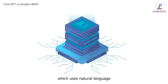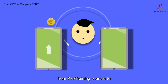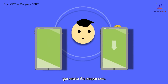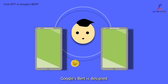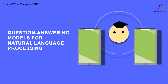Unlike Google's BERT, which uses natural language processing, ChatGPT relies on pre-existing data from pre-training sources to generate its responses. In contrast, Google's BERT is designed specifically for conversation and uses a different approach called question-answering models for natural language processing.